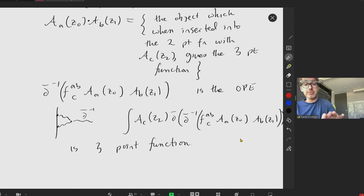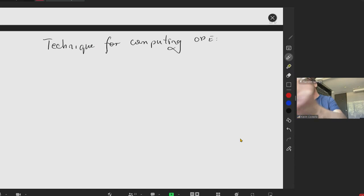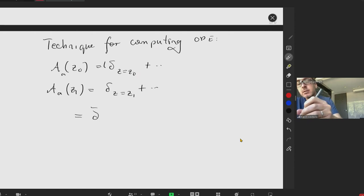So if the OPE is something that's actually easier to compute than the three-point function, so let me quickly explain the technique for doing that. So the technique for computing the OPE of A_a at z0 looks like this.